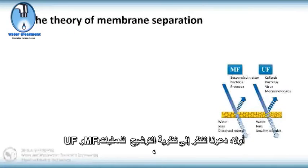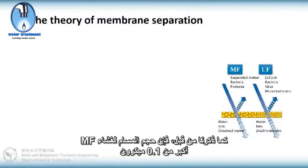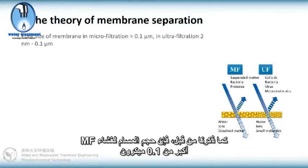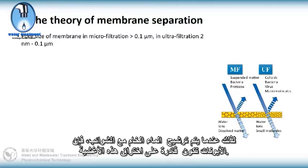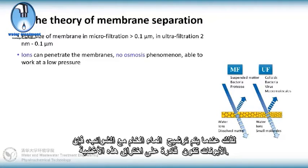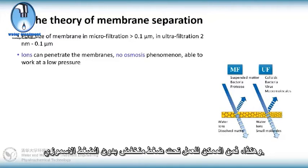As mentioned before, the pore size of MF membranes is larger than 0.1 micrometer, and that of UF membranes ranges from 2 nanometers to 0.1 micrometer. So when raw water with impurities is filtered, ions are able to penetrate these membranes. Thus, it's possible to work under low pressure without osmotic pressure.